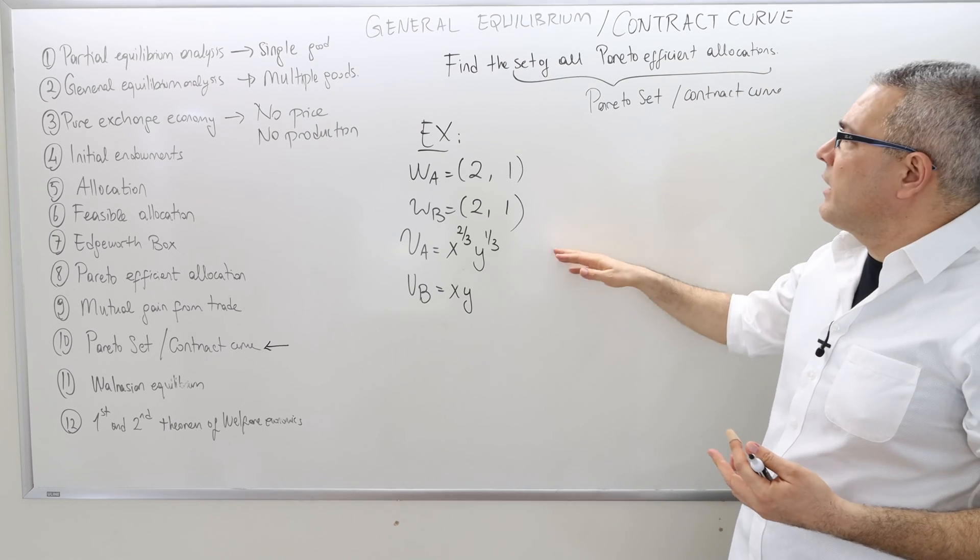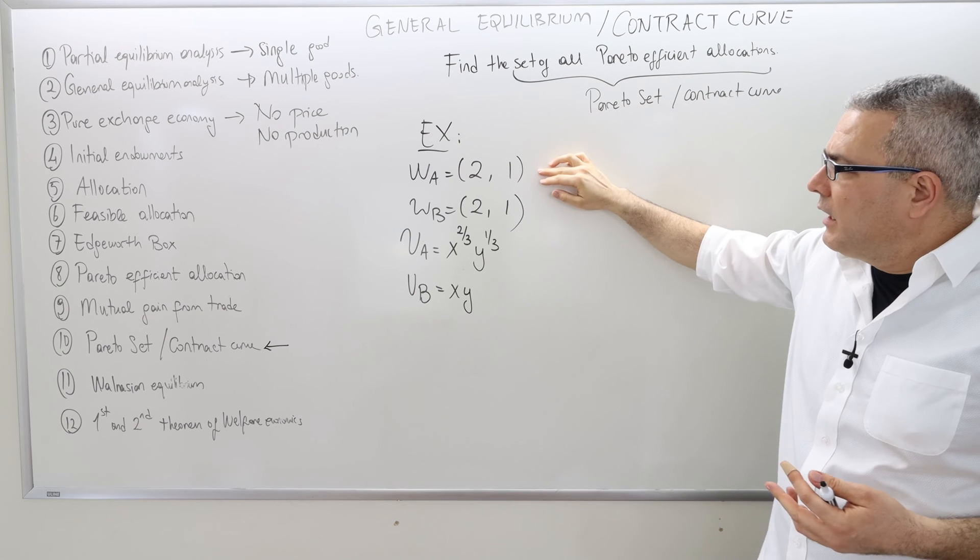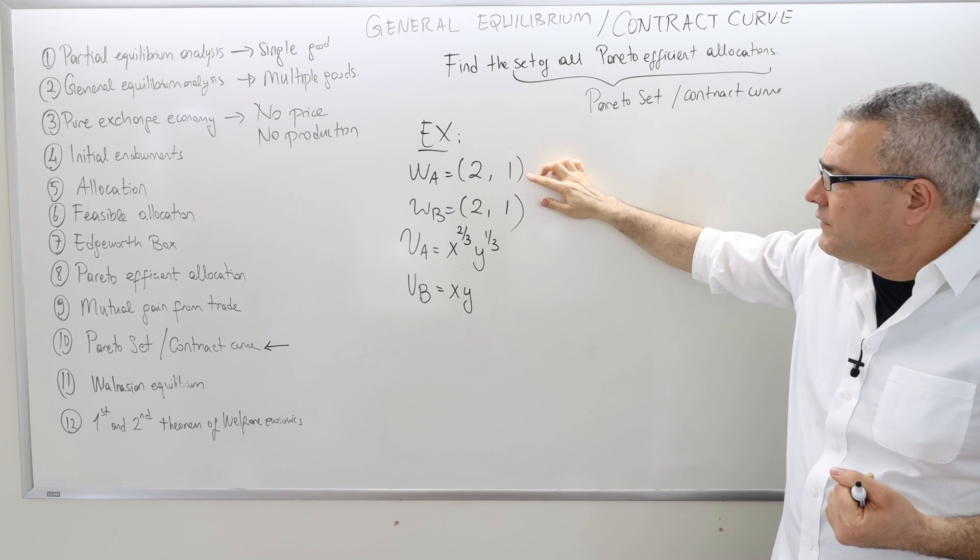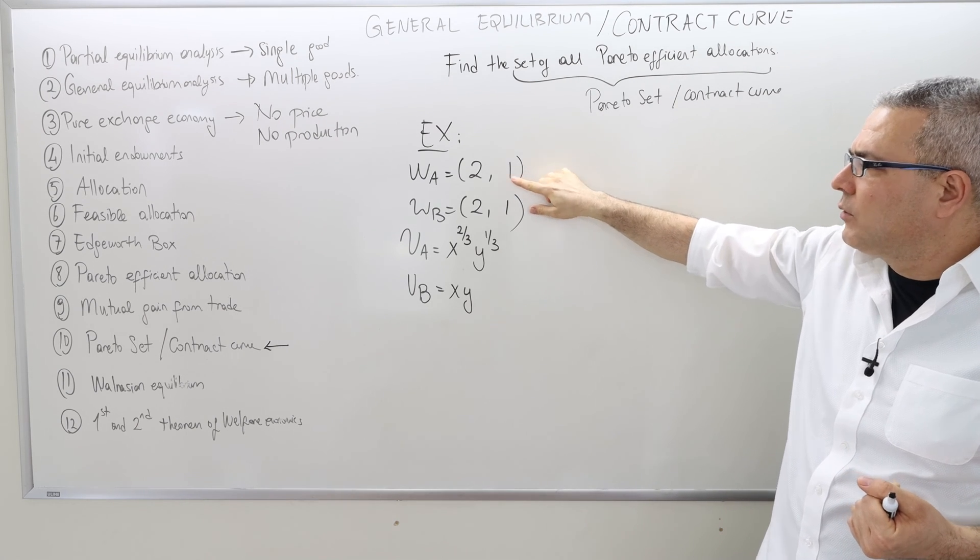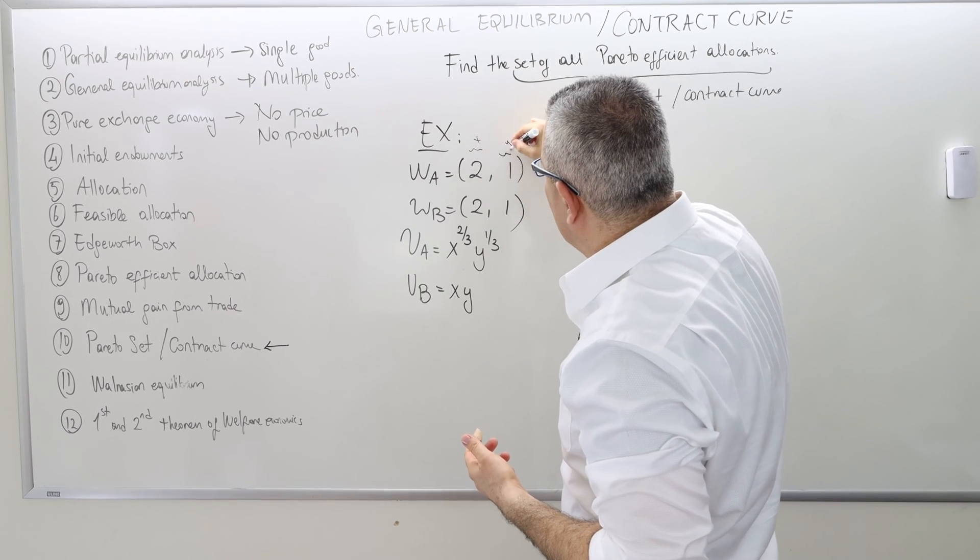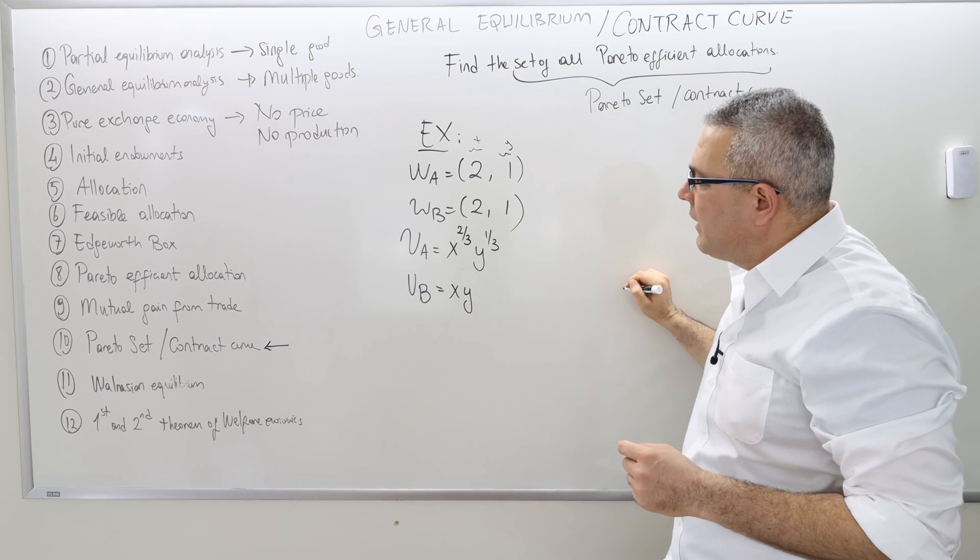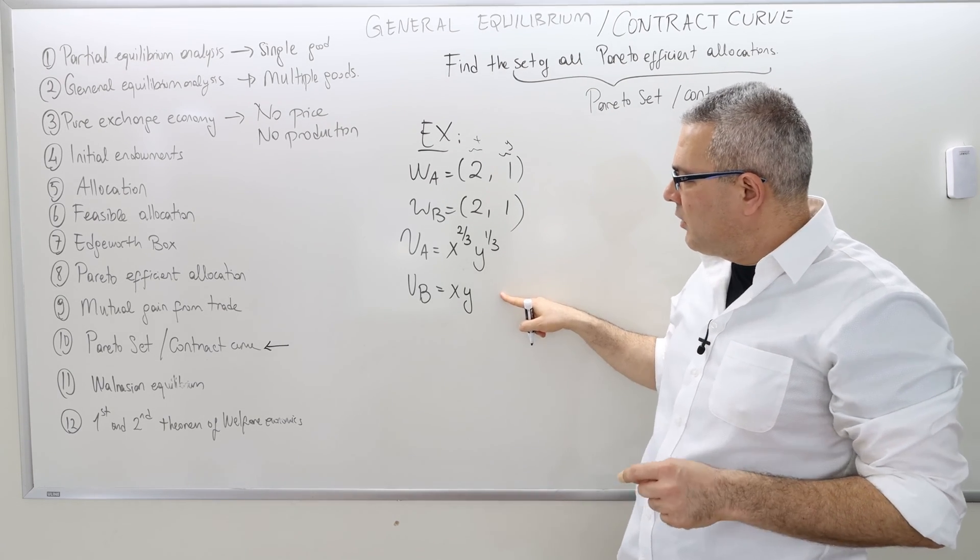Here is another example where I'm going to calculate the Pareto set or the contract curve. Initial endowment for agent A is 2 good 1, 1 good 2, or good x, good y. This is good x, this is good y. And same for initial endowment for agent B.